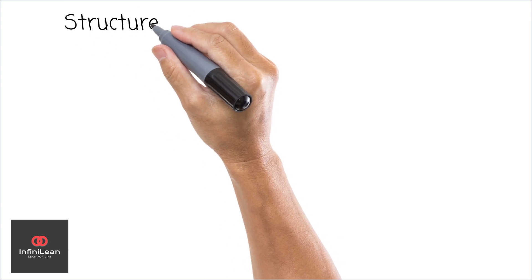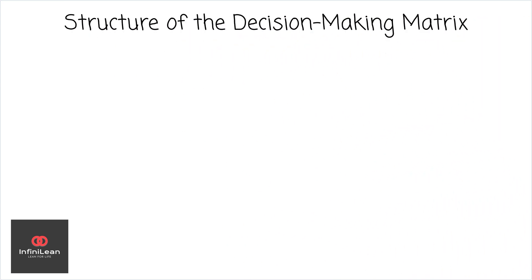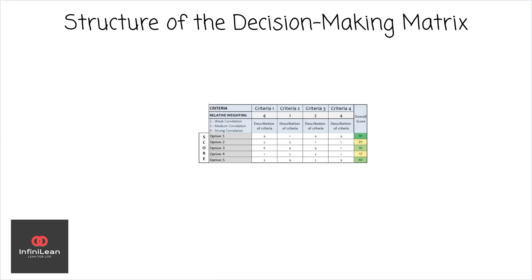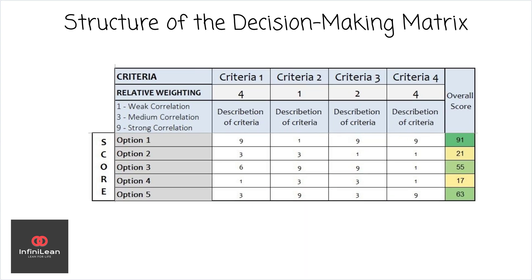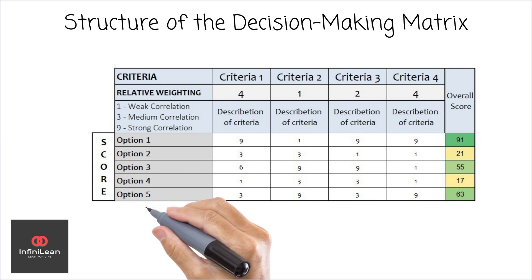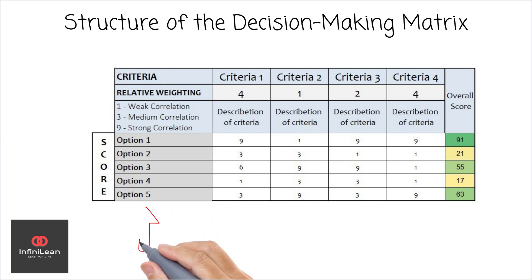Firstly, the Decision-Making Matrix is a grid. The rows represent the options you must choose from, and the columns denote the criteria by which these options will be judged. Before building your matrix, make sure to identify all the potential options that need to be evaluated. Perhaps you're trying to decide on a new supplier or selecting a project management tool — it could be anything business-related.